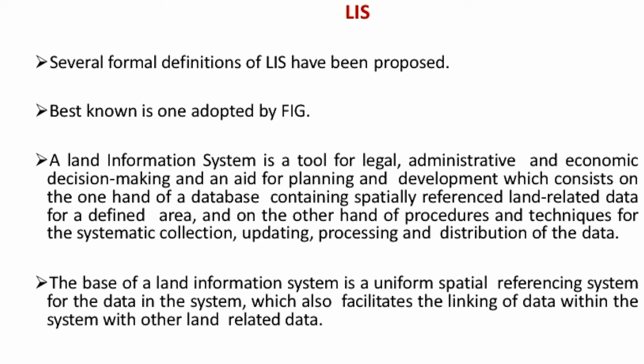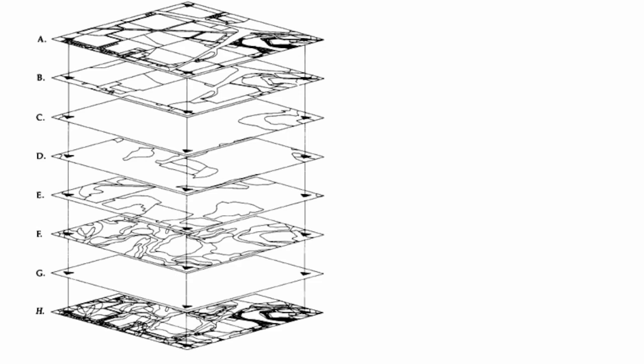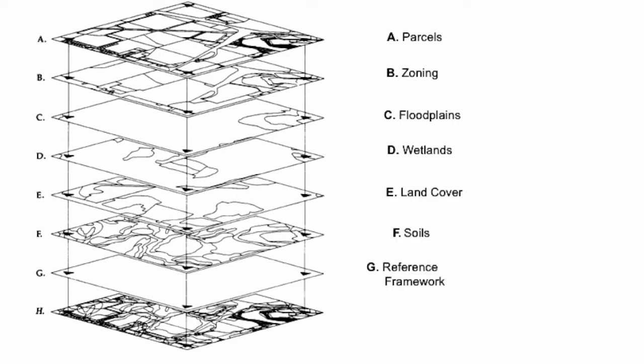The base of a land information system is a uniform spatial referencing system for the data, which also facilitates the linking of data within the system with other land-related data. An example shows components such as parcel, zoning, floodplains, wetlands, land cover, a spatial reference framework, and composite overlay — these are the kinds of data layers that make LIS effective, efficient, and economic.